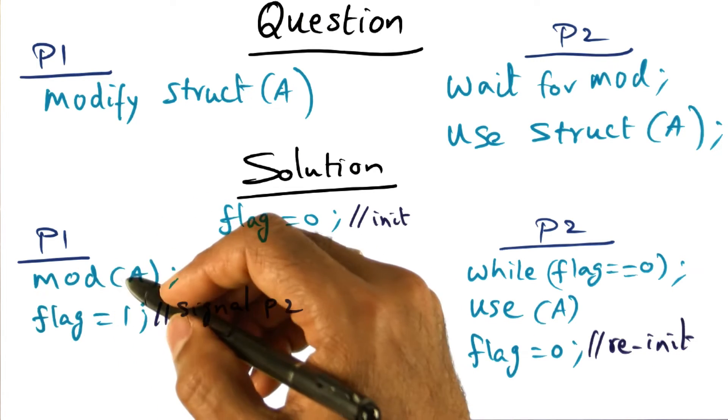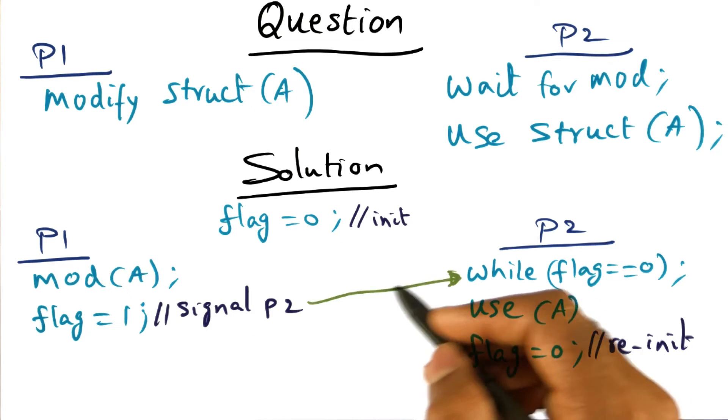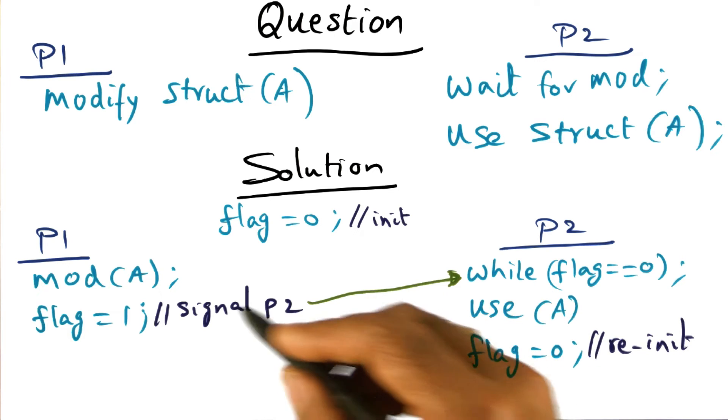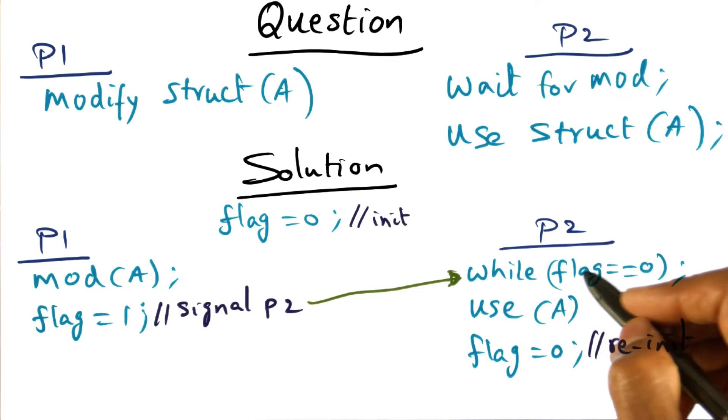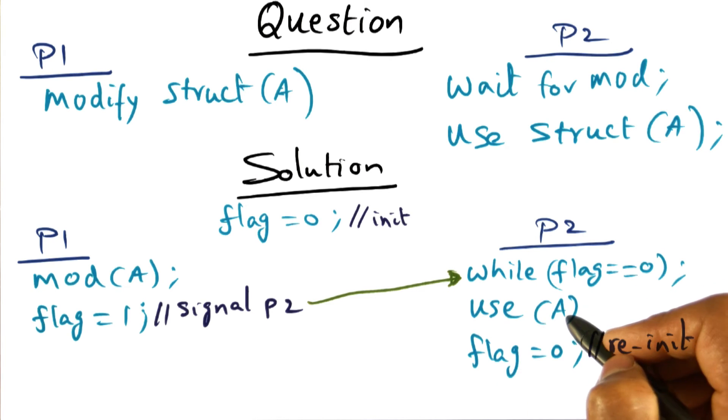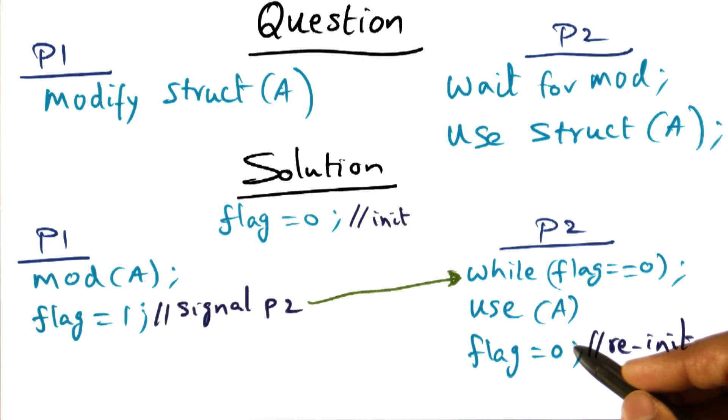Now once P1 is done with its modification, it's going to set this flag to a 1. And that's the signal that this guy is waiting for. And as soon as this flag changes to a 1, then he'll break out of this spin loop here. And he's now ready to use the data structure. And once he's done using the data structure, he can flip it back to 0 to indicate that he is done using it so that the next time if the producer wants to modify it again, he can do that.